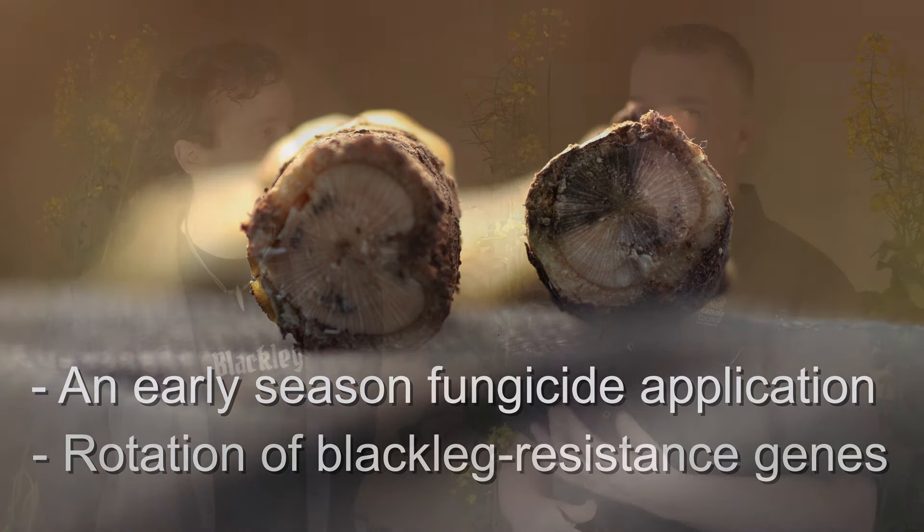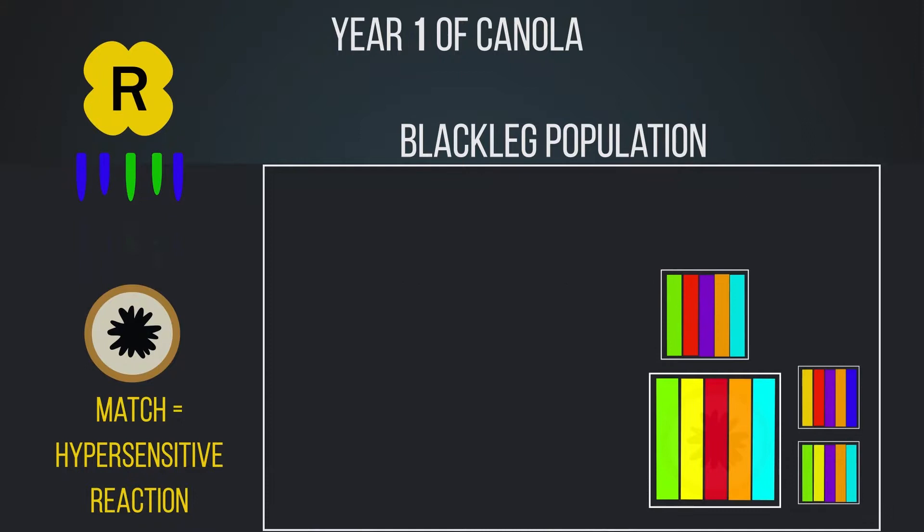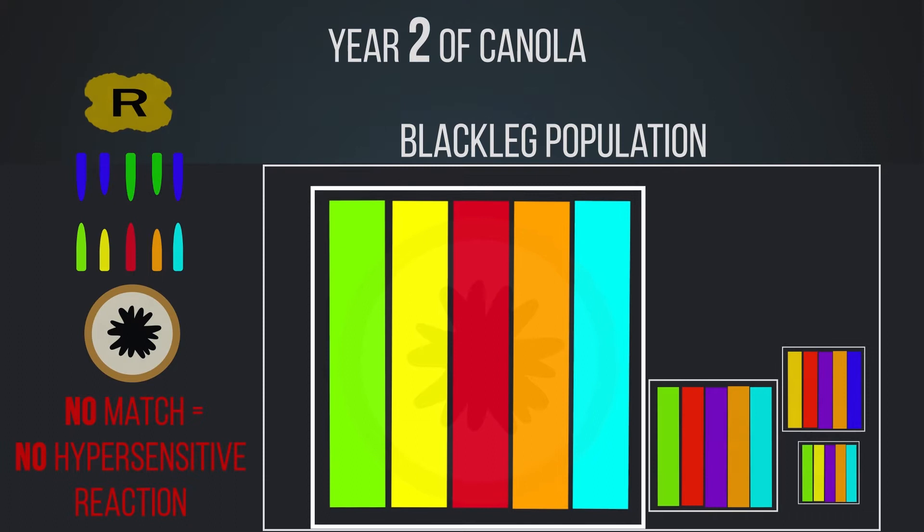The rotation piece is really important because what we do know is that if you use one resistance gene in a field and there's a pathogen population, the individuals that are capable of overcoming or avoiding that resistance are the ones that will be successful at producing spores next time. So if you go back to that field and use that same type of resistance again, now you have a much bigger population that will be able to overcome that resistance. That's why it's better to switch to a new type of resistance gene.